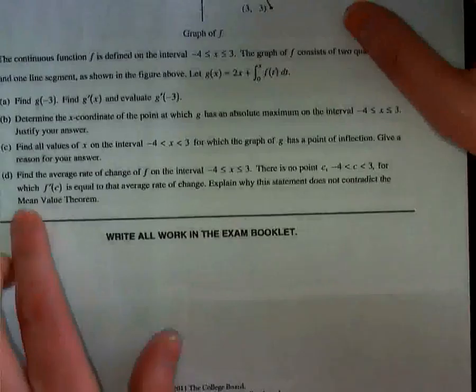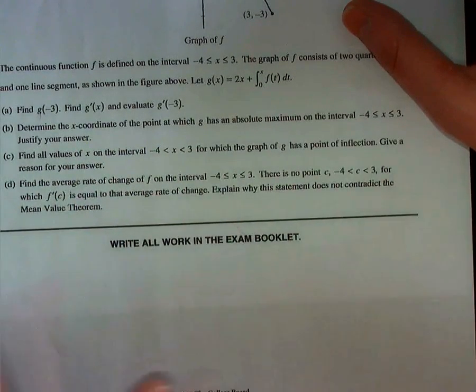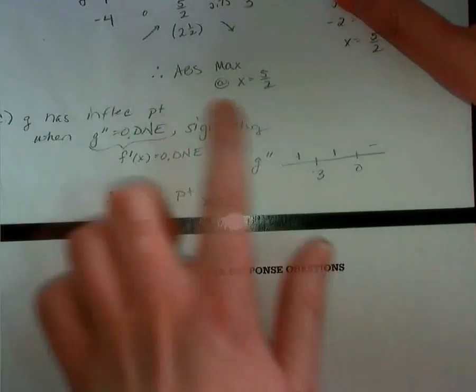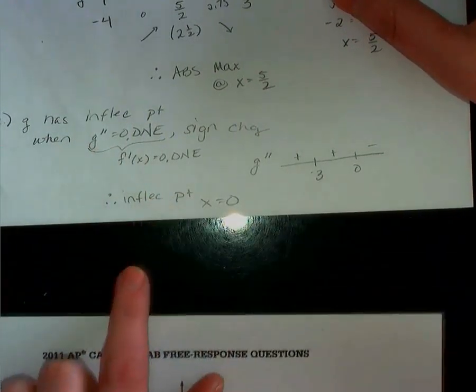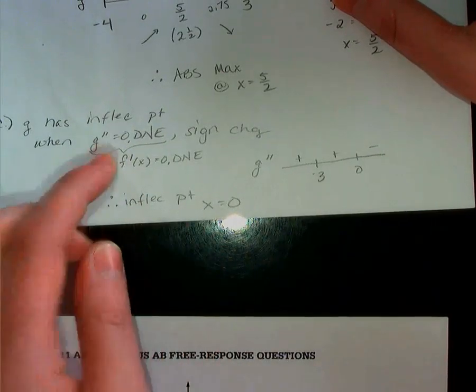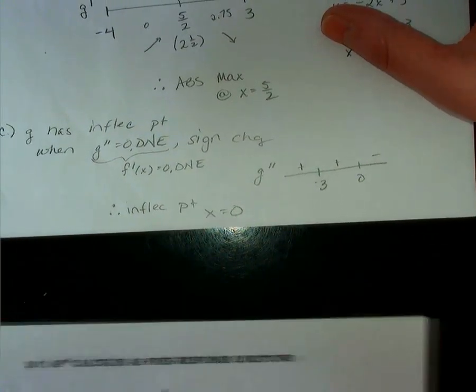Part C. Find all values on the interval where g has a point of inflection and give a reason. So for part C, my inflection point is when g double prime is 0 or DNE and has a sign change. Well, think about g double prime. Go back to the original function g(x) and g prime of x. If this is g prime, I need g double prime. So I take the derivative. The derivative of 2 is 0. The derivative of f is f prime. So g double prime is equal to f prime. That's where I got this piece of information right here. So if I want to know when g double prime is 0 or DNE, that means I really want to know when f prime is 0 or DNE.